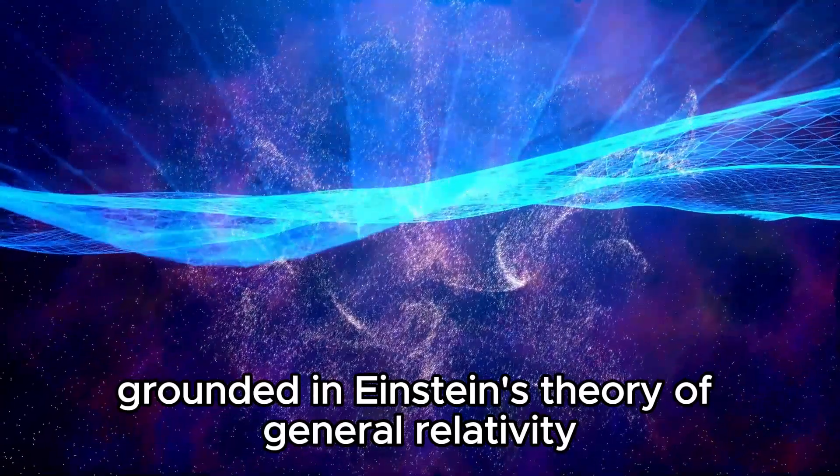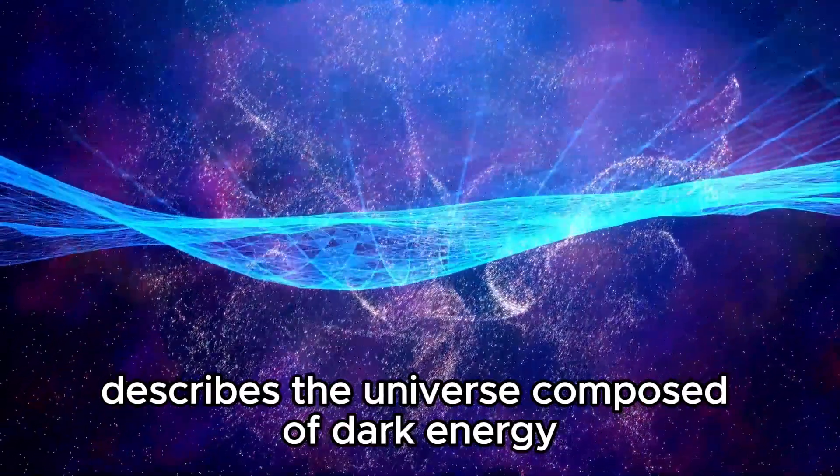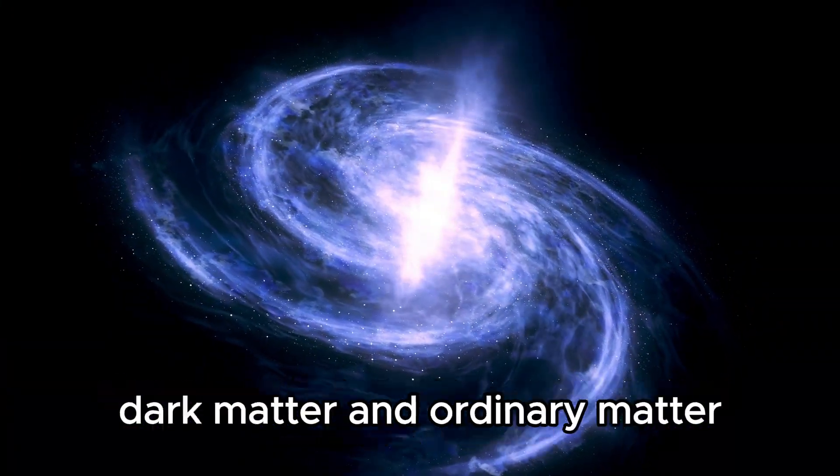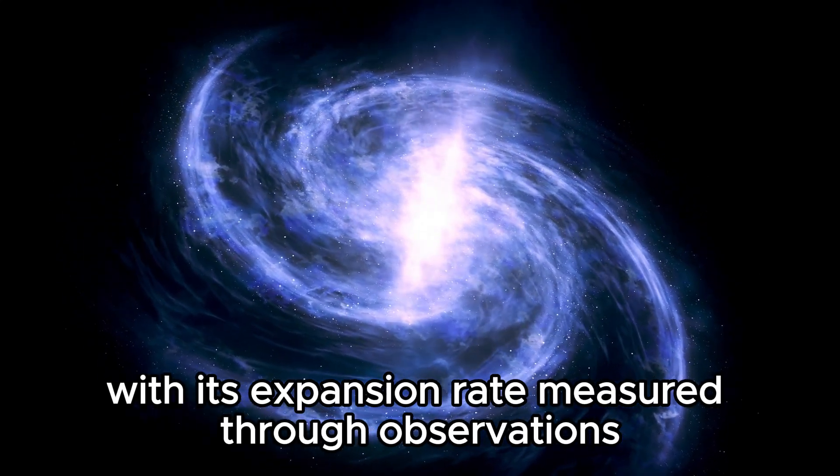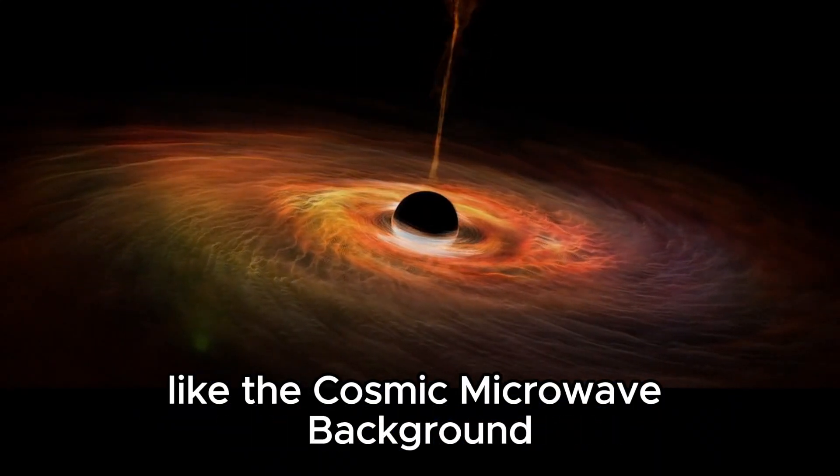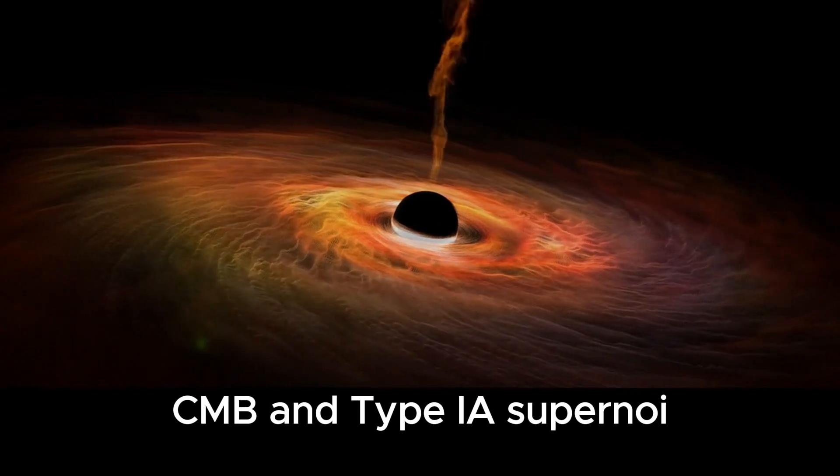This model, grounded in Einstein's theory of general relativity, describes a universe composed of dark energy, dark matter, and ordinary matter, with its expansion rate measured through observations like the cosmic microwave background CMB and type 1a supernovae.